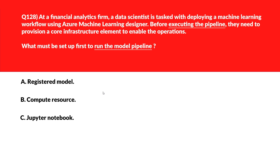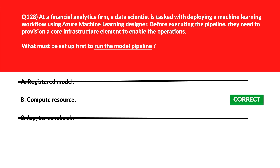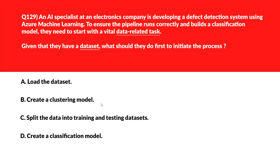Now let's look at the question about executing a pipeline. Option A is Registered Model — this is the result of a successful pipeline run, not a prerequisite for execution, so it's out. Option B is Compute Resource — compute resource provides the processing power required to execute steps in the model pipeline — let's keep this. Option C is Jupyter Notebook — the designer interface doesn't rely on it to operate the pipeline — wrong choice. We'll lock option B, Compute Resource, as the right answer.